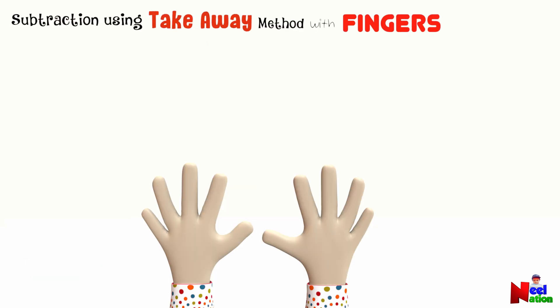Now, let's do subtraction using take away method with our fingers. Let's find out what is six minus two. In six and two, which is the bigger number? Six. You're right. Let's begin by holding up six fingers. Yes. To take two away from six, let's fold down two fingers. One. Two.